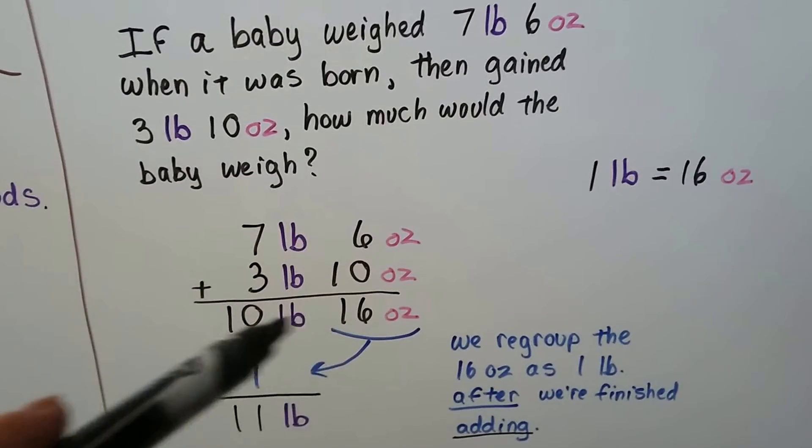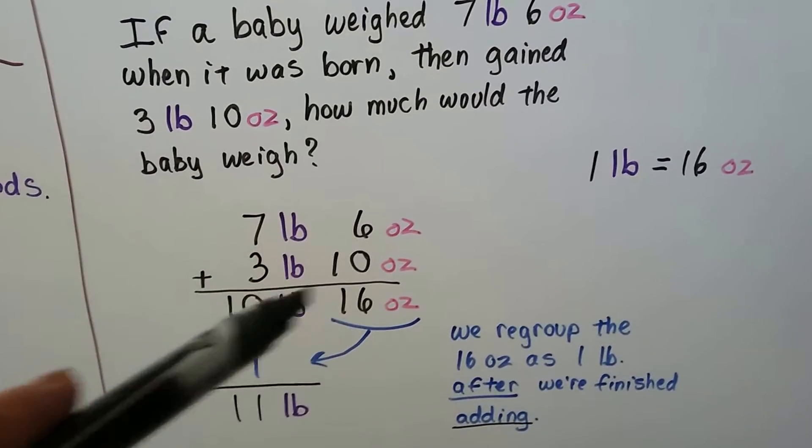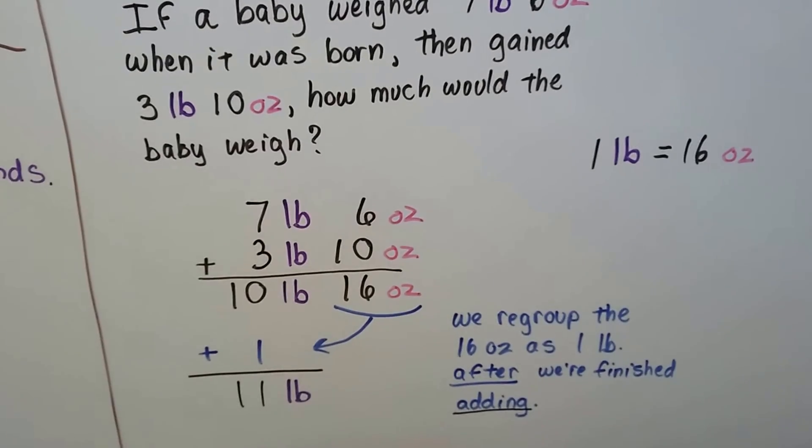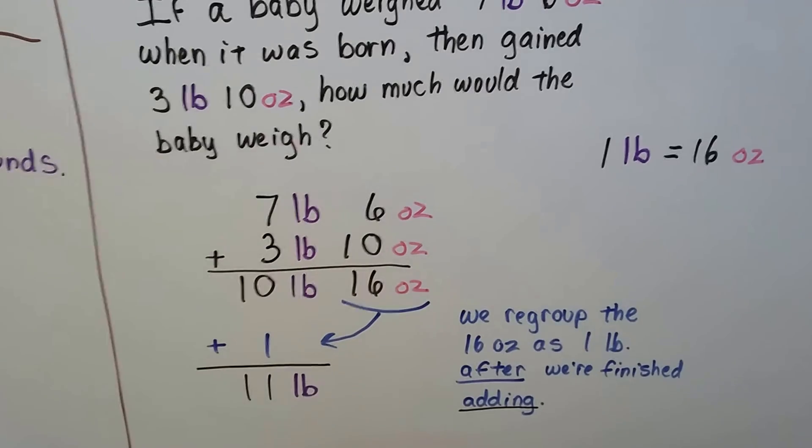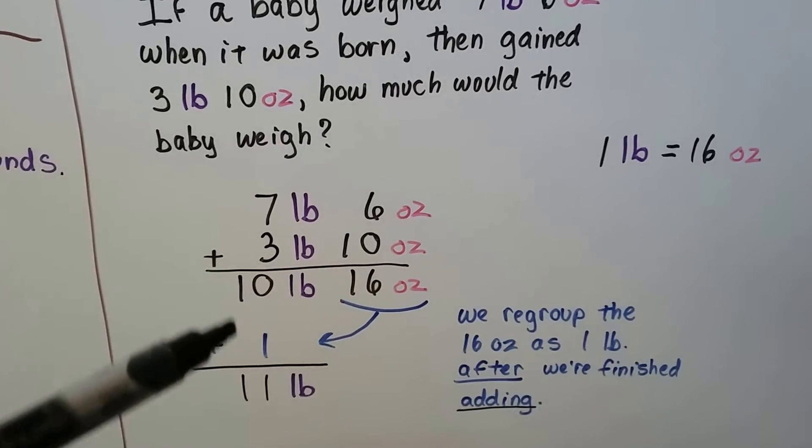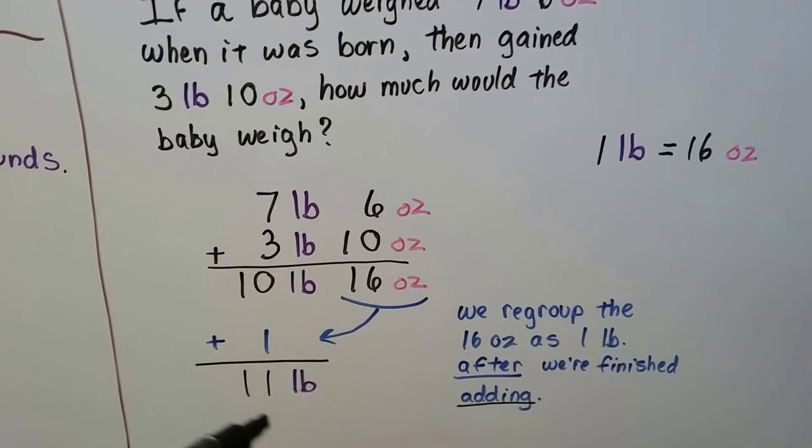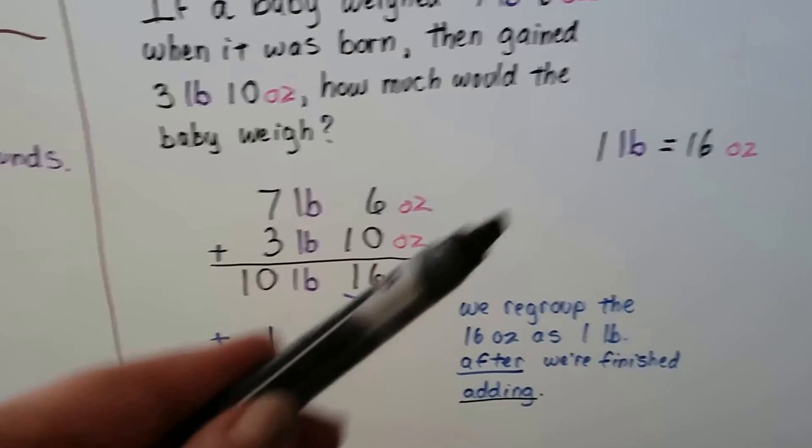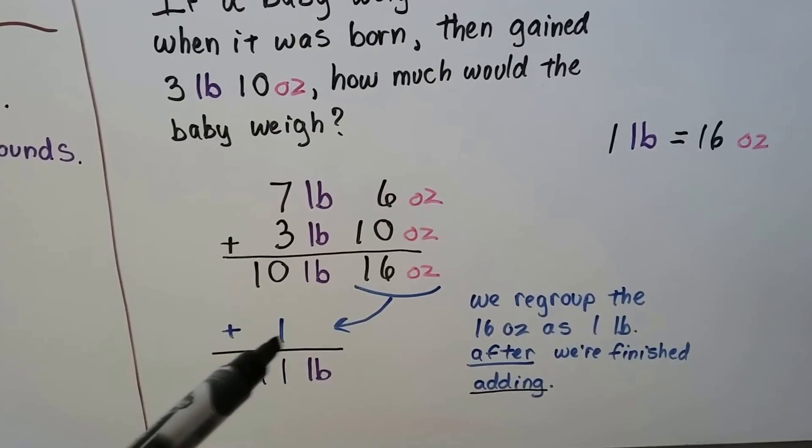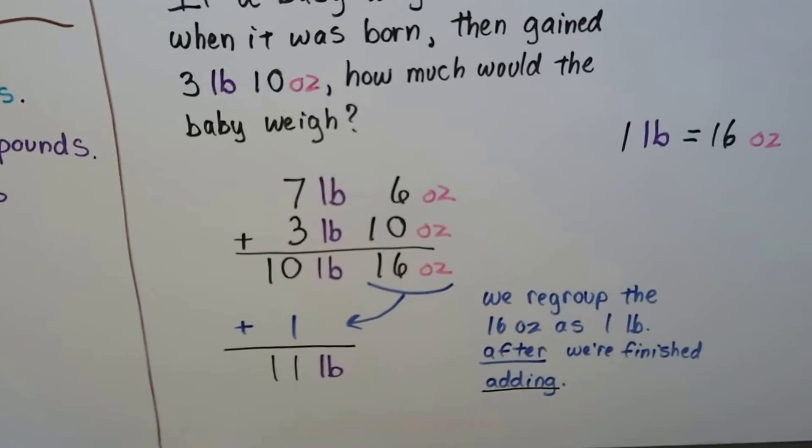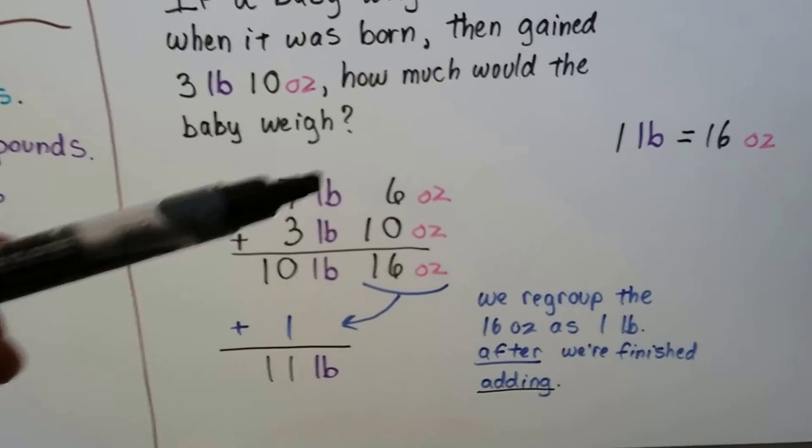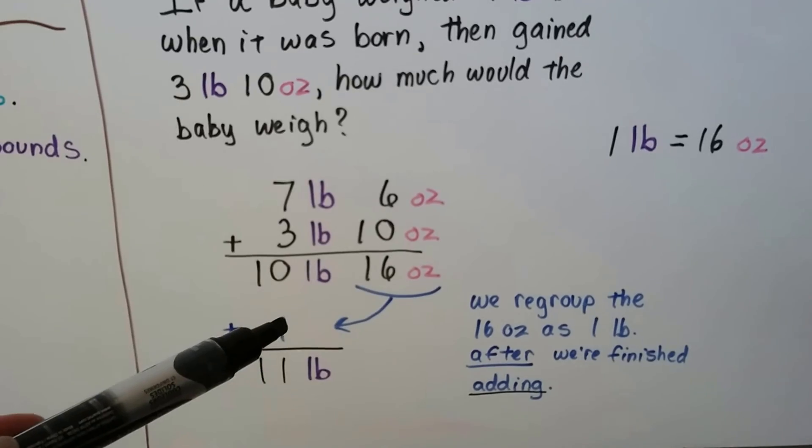Now that we've added each of the measuring increments, now we regroup them. See, we don't have to regroup or carry over or anything. We do it at the end. So now this 16 ounces is 1 pound, we can move that to the pound side. So it would be 11 pounds and no ounces. So when you're adding like this, just remember to regroup at the end.